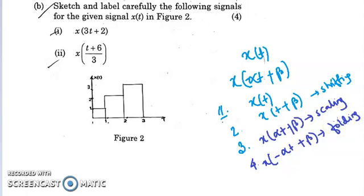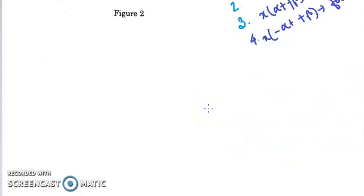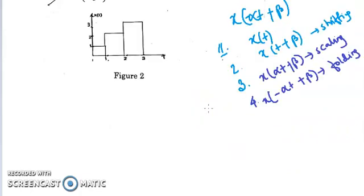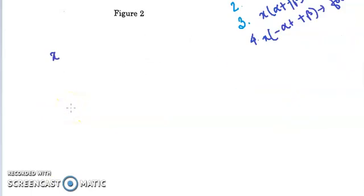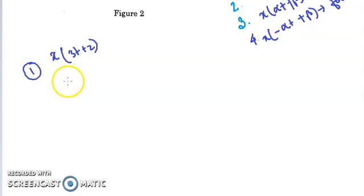The signal X(T) is given. For the first question we need to find X(3T+2). So for X(3T+2), the first step is to find X(T+2).